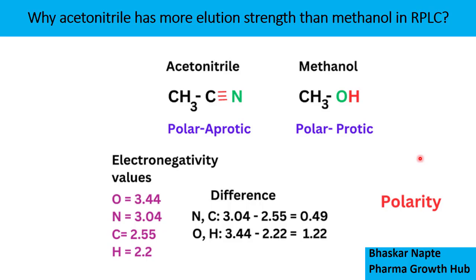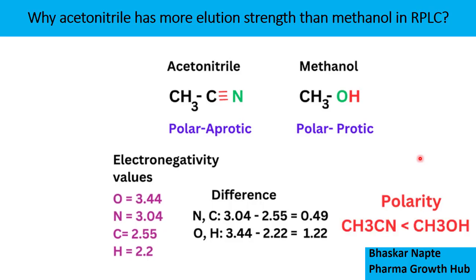So, which compound is going to be more polar — ACN or methanol? The more the difference in electronegativity, the more the polarity. With this logic, methanol becomes more polar than acetonitrile. This is a very important point as to why acetonitrile has more elution strength than methanol in RPLC. In RPLC, the stationary phase is non-polar in nature.